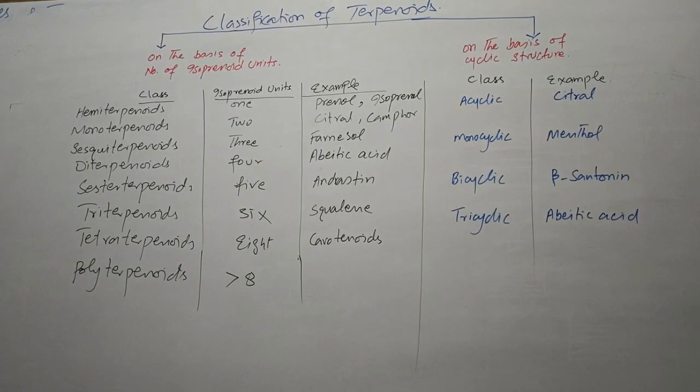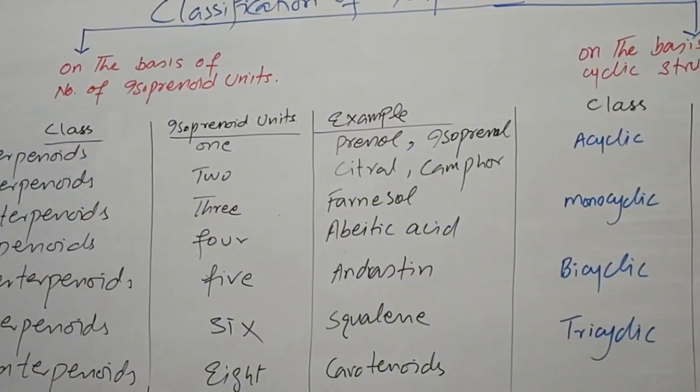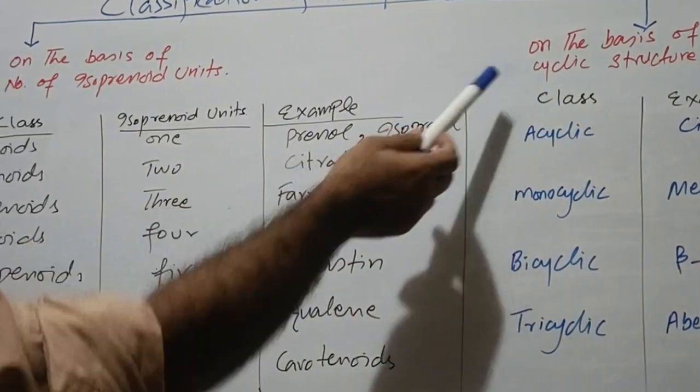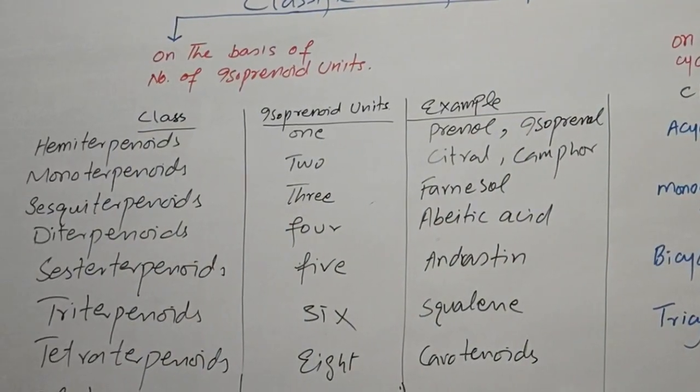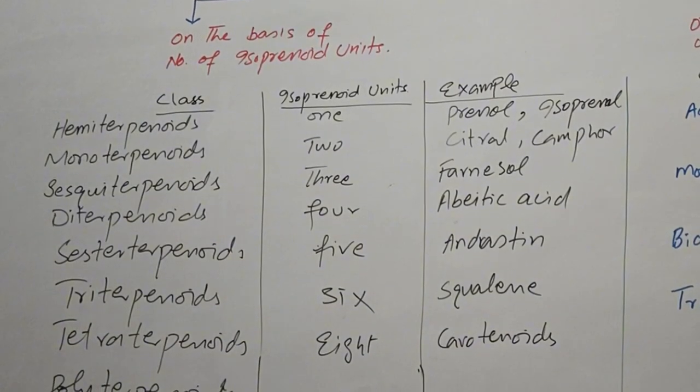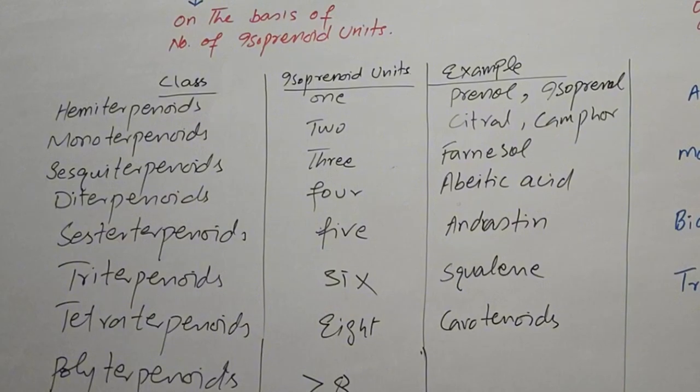Now classification of terpenoids. We can classify the terpenoids on the basis of number of isoprenoid units as well as on the basis of presence or absence of cyclic structure in the terpenoids. First of all, let's see the classification of terpenoids on the basis of number of isoprenoid units.